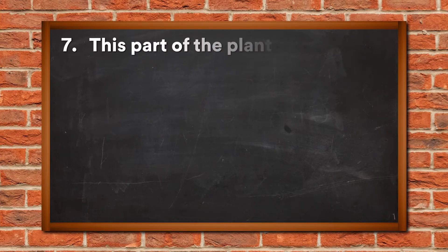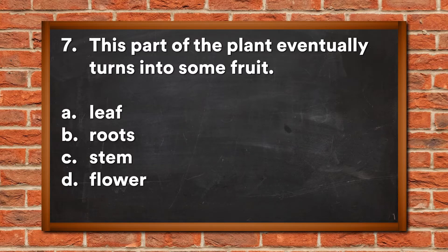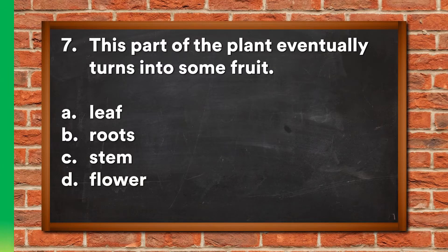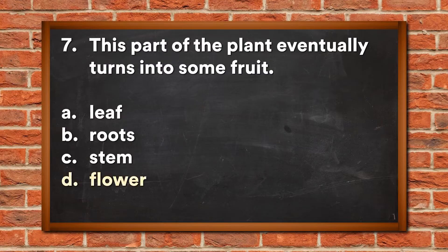Question 7: This part of the plant eventually turns into some fruit. A. Leaf, B. Roots, C. Stem, D. Flower. The answer is D, Flower.